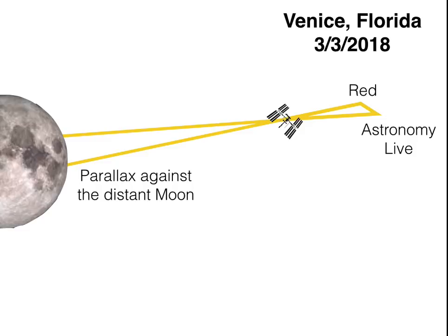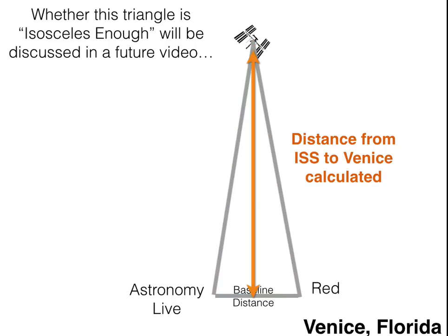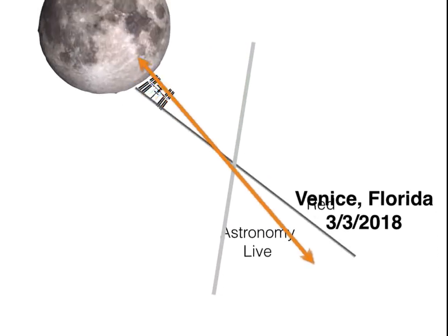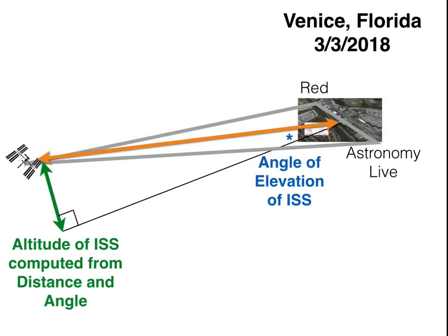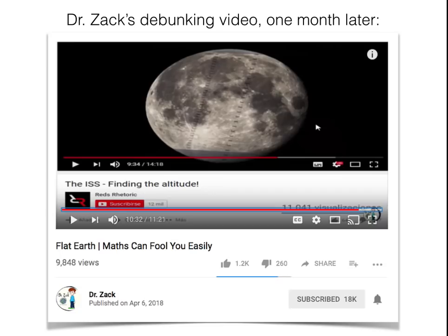This produced parallax against the distant moon. Looking at that triangle again — there's a lot of argument over whether it's actually an isosceles triangle or isosceles enough — but the bottom line is if you know that angle, that parallax angle, and the baseline distance, you can actually compute the distance to the ISS. Taking that distance and the angle of elevation, you can actually figure out the altitude of the ISS. That's the basics of it.